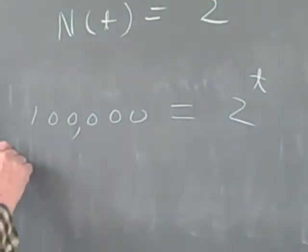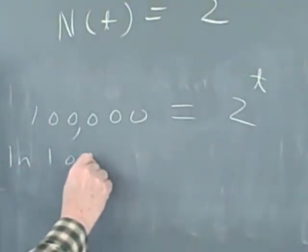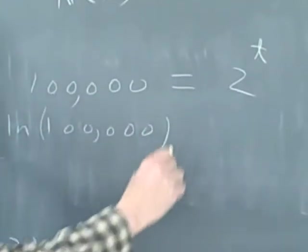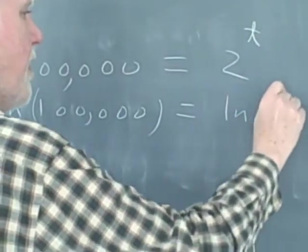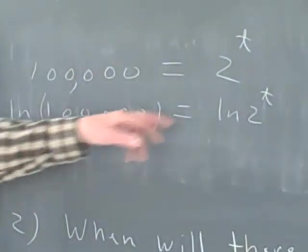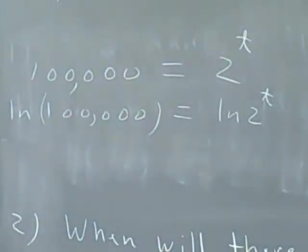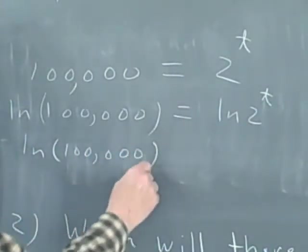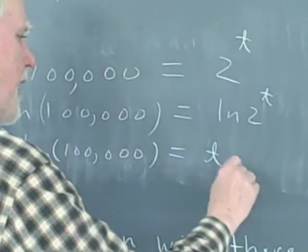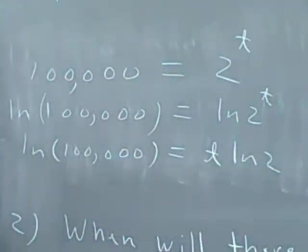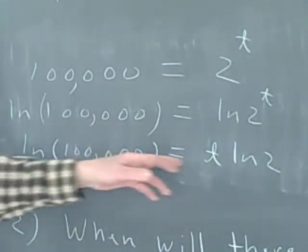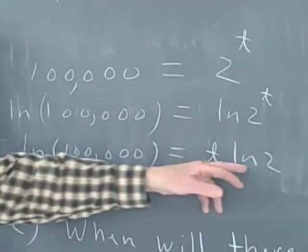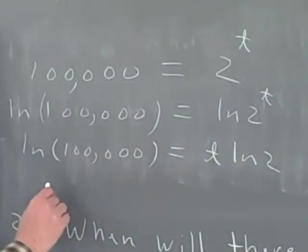The way we do this is we take the log of both sides. The log of 100,000 equals the log of 2 to the t. And we use our logarithmic properties to bring this t out front. It's one of the logarithmic properties that we can bring the exponent out front. When we do that, we'll have the log of 100,000 equals t times the log of 2. Now it's important to remember that this is just a number, this log of 100,000. This is a linear equation for t. So if I divide both sides by the log of 2, I'll have what t is.